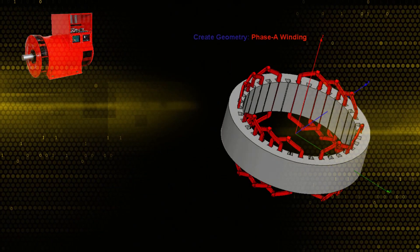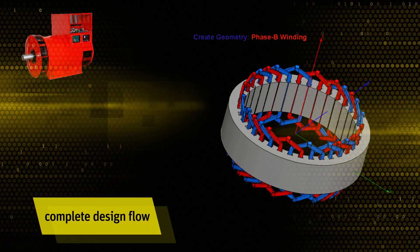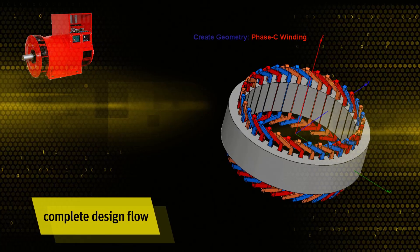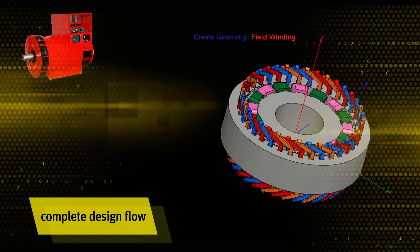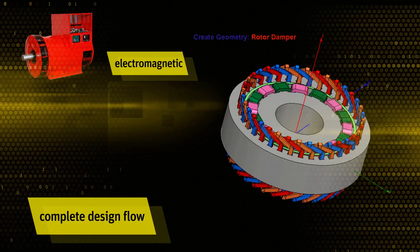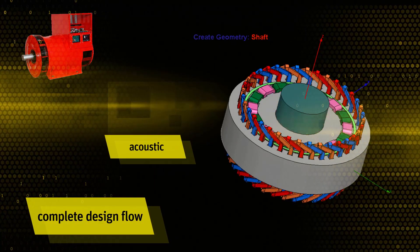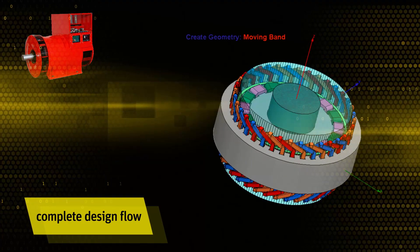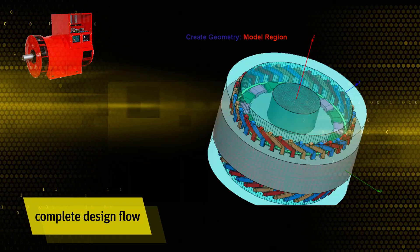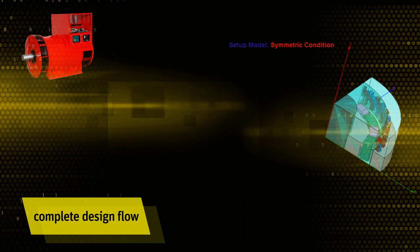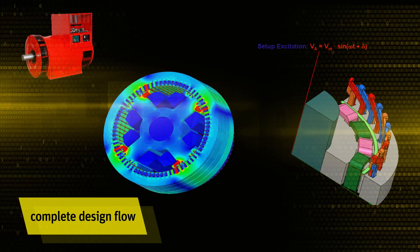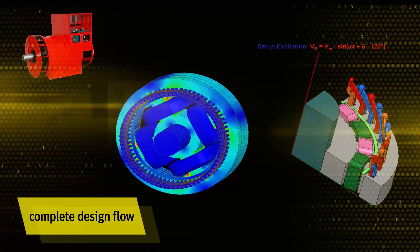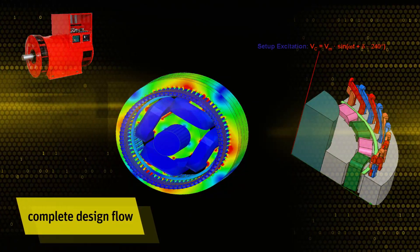We now turn our attention to the alternator. ANSYS provides a complete design flow for electric machines that progresses from analytical design sizing to rigorous electromagnetics design to fully coupled electromagnetic, thermal, stress, and acoustic physics modeling. ANSYS RM-Expert provides fast calculations of machine performance. Detailed 2D and 3D models can then be passed on to ANSYS Maxwell for detailed finite element simulation of electromagnetic effects.